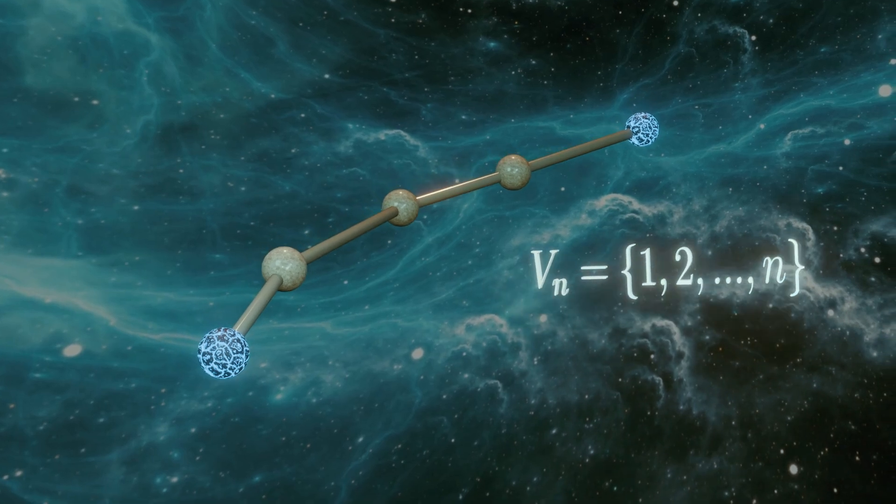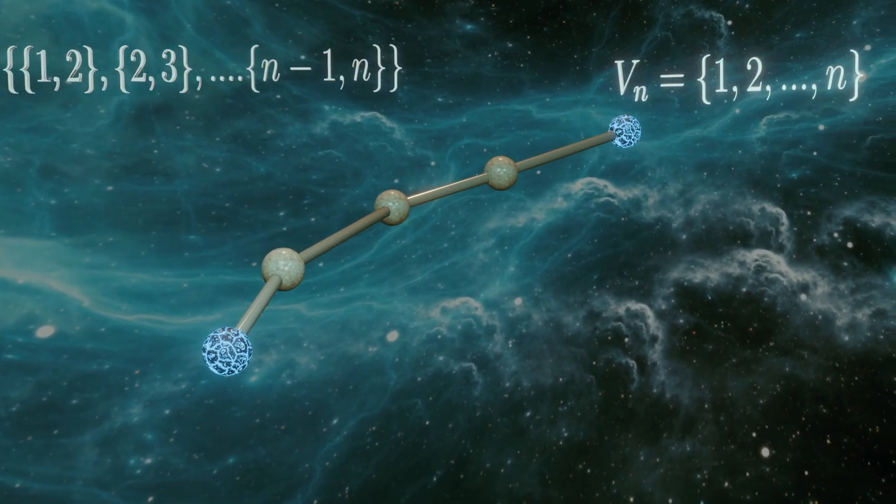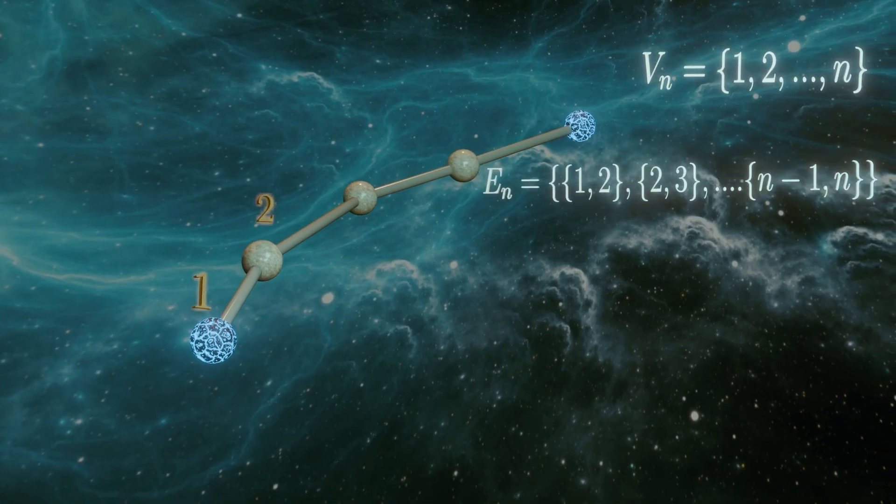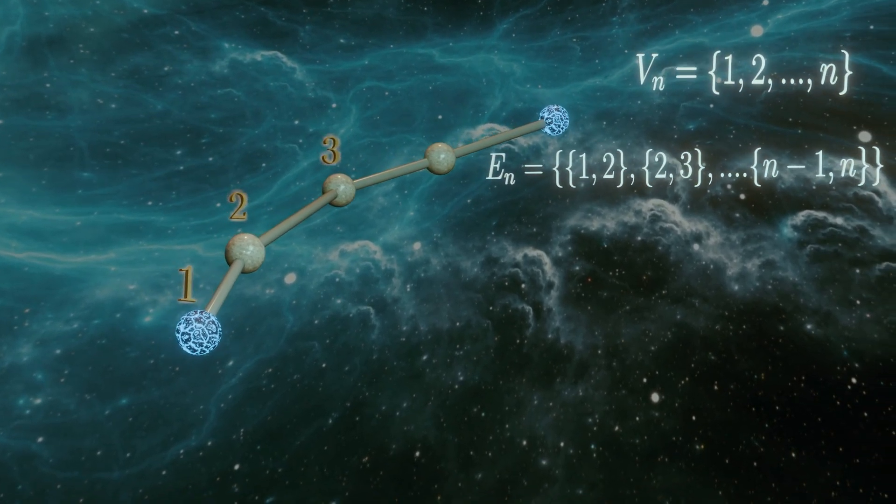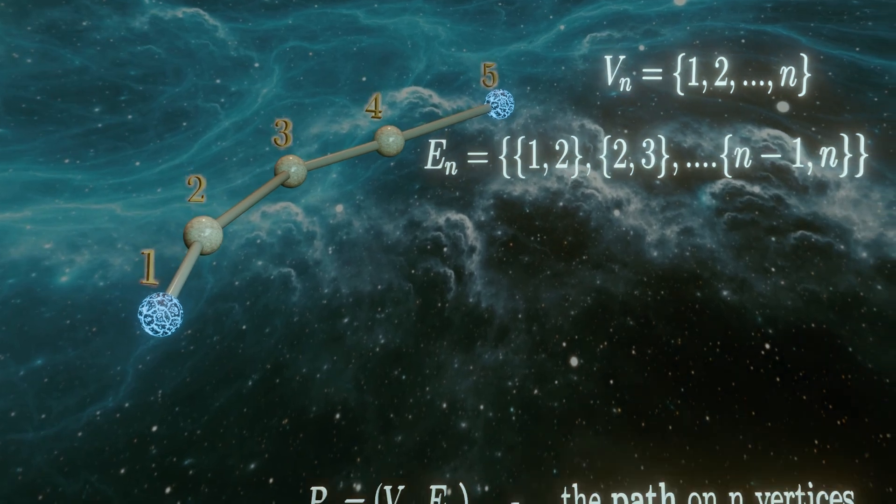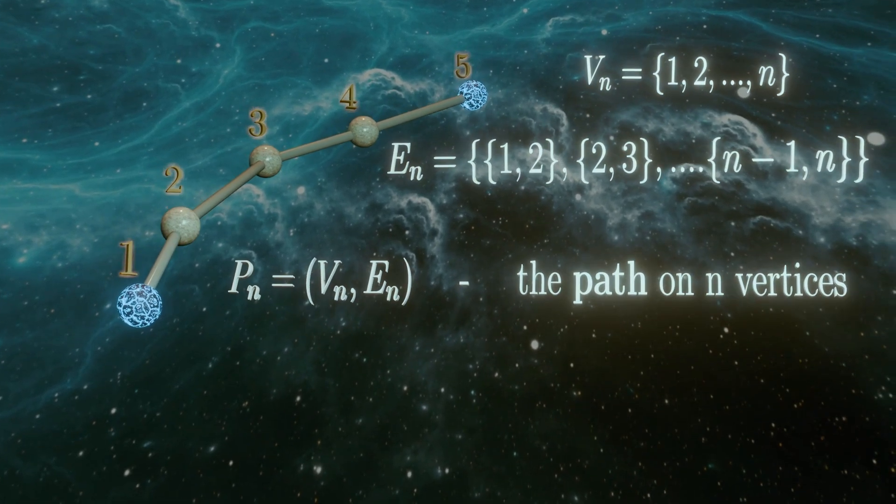such that the edges of the graph are precisely the set of consecutive pairs, so an edge between 1 and 2, an edge between 2 and 3, up to an edge between n-1 and n, then this graph we call Pn, the path on n vertices.